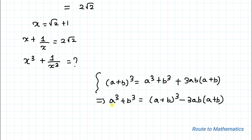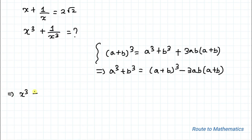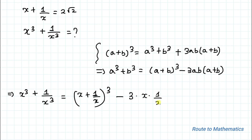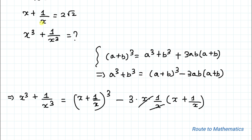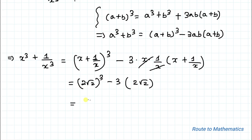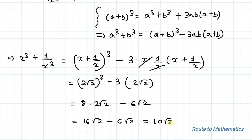Let a equal x and b equal 1 by x. So x cubed plus 1 by x cubed equals (x plus 1 by x)³ minus 3 times x times (1 by x) times (x plus 1 by x). The x and 1/x cancel out. Substituting x plus 1 by x equals 2 root 2, we get (2 root 2)³ minus 3 times (2 root 2), which equals 8 times 2 root 2 minus 6 root 2, giving 16 root 2 minus 6 root 2, which equals 10 root 2 as our answer.